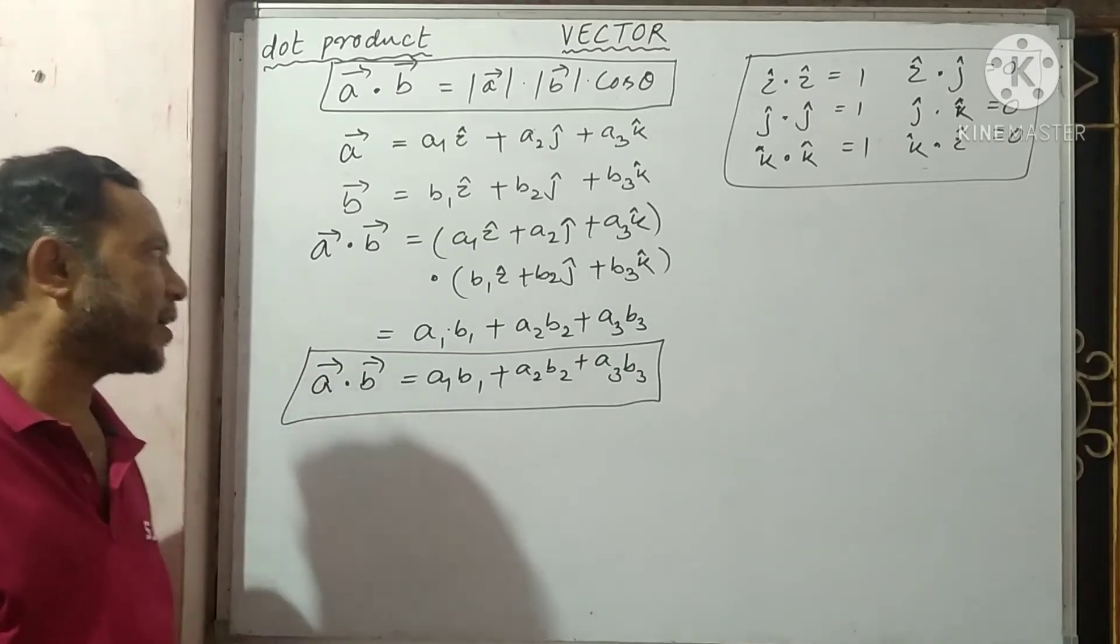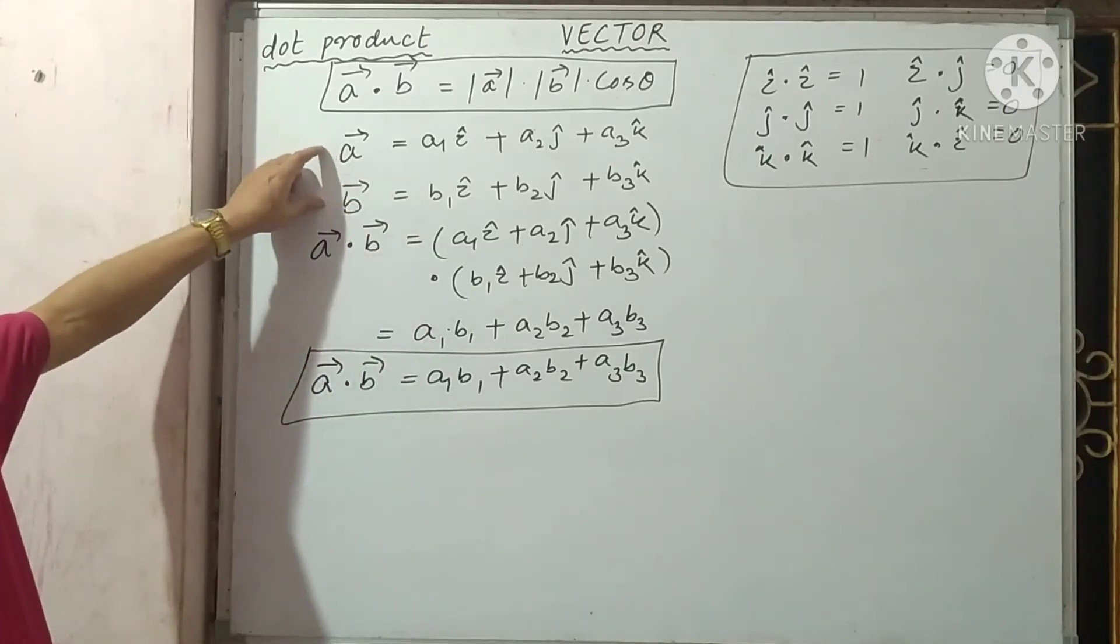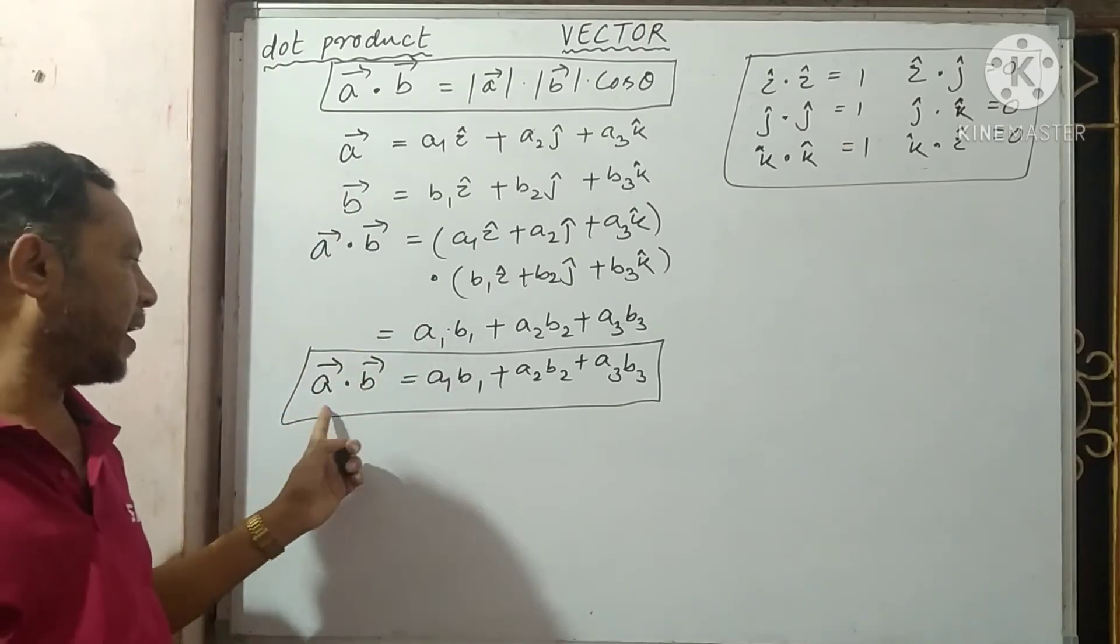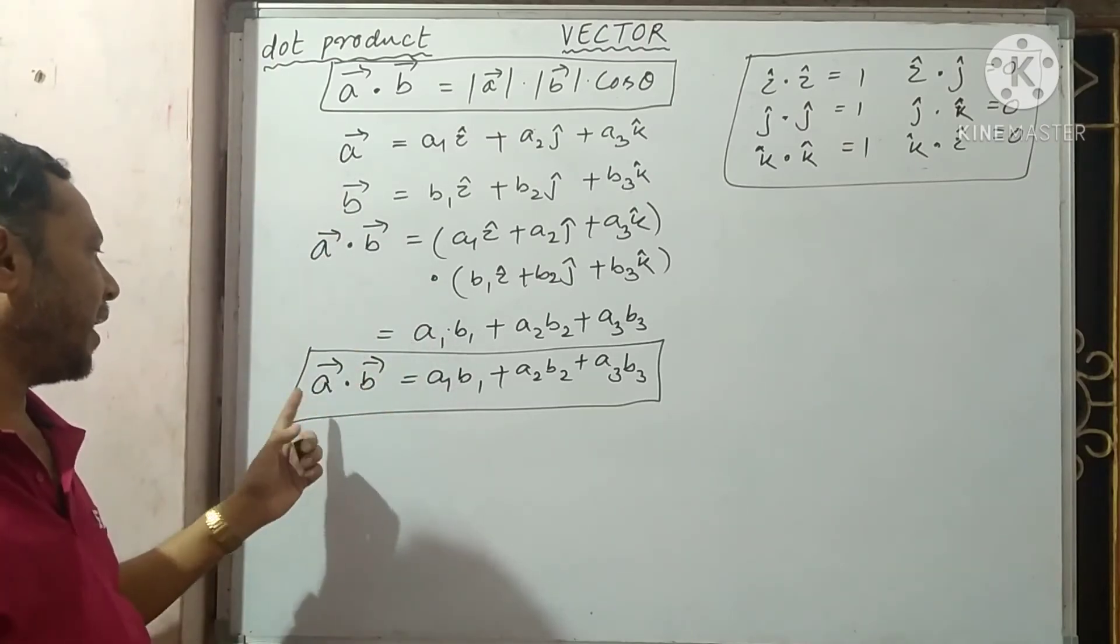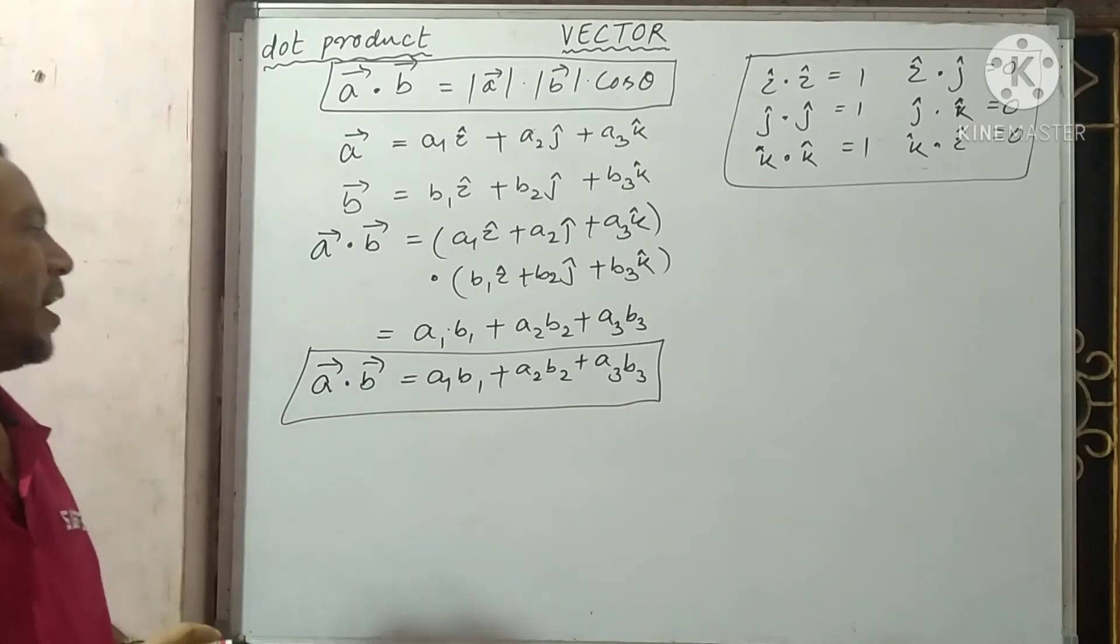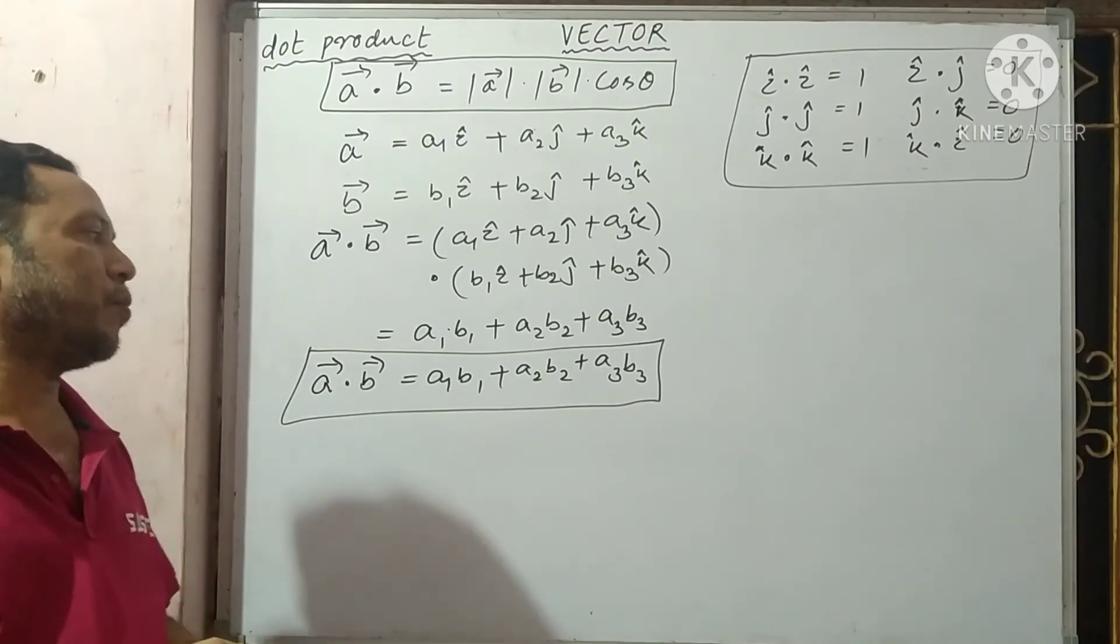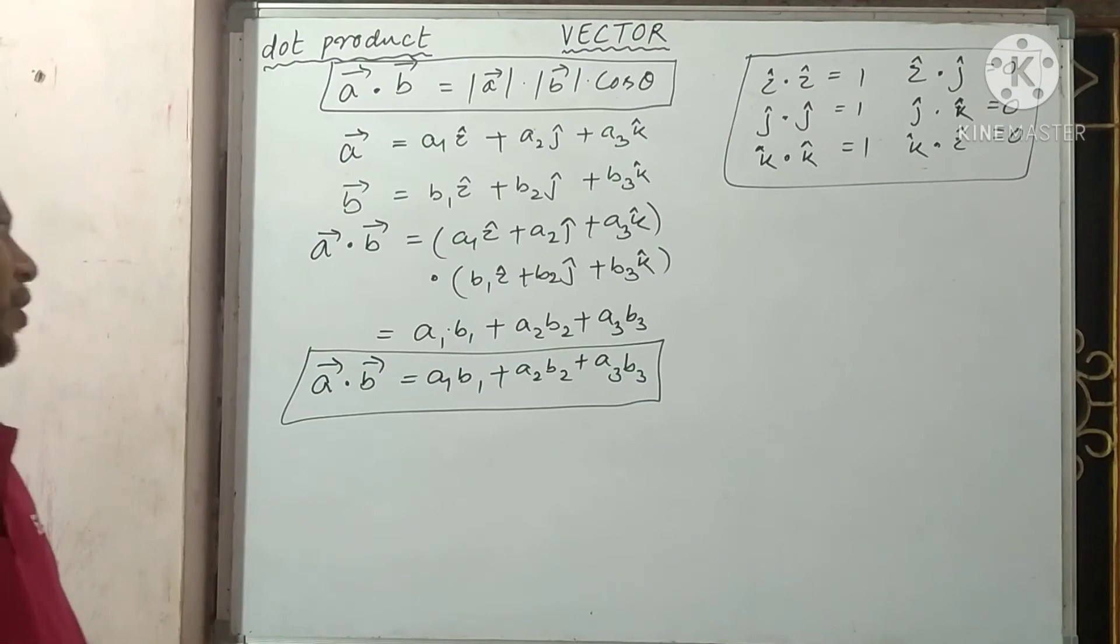So if two vectors are given in rectangular components, we can directly write the result of A dot B as A1 B1 plus A2 B2 plus A3 B3.